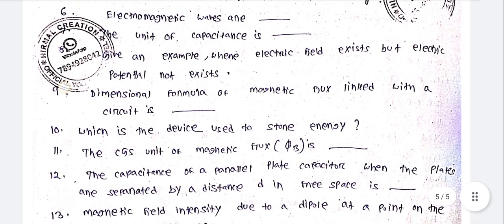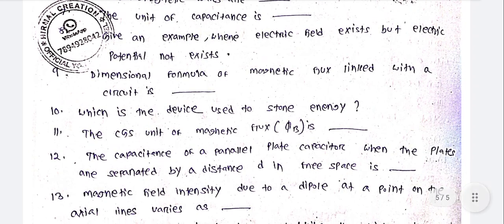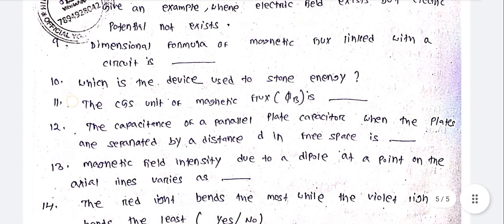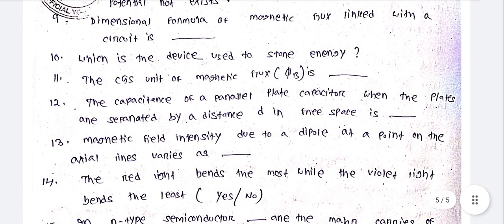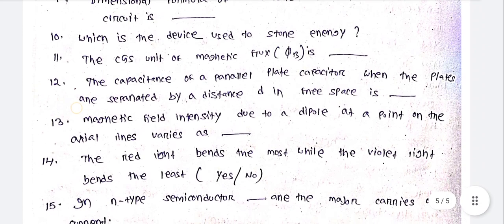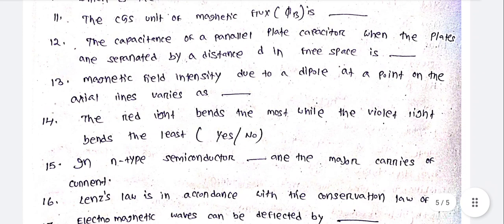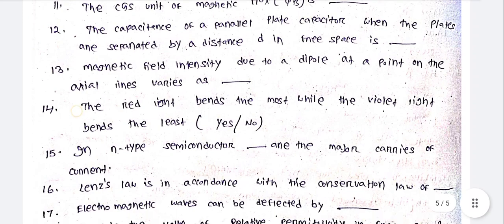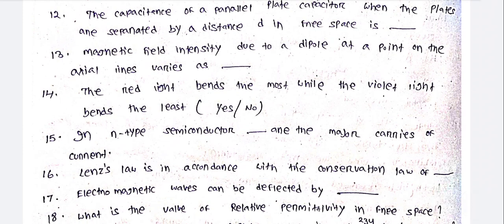This is a big question. The dimensional formula of magnetic flux linked with a circuit is dash. Which is the device used to store energy? The CGS unit of magnetic flux phi is dash. The capacitance of a parallel plate capacitor when the plates are separated by a distance d in free space is dash.